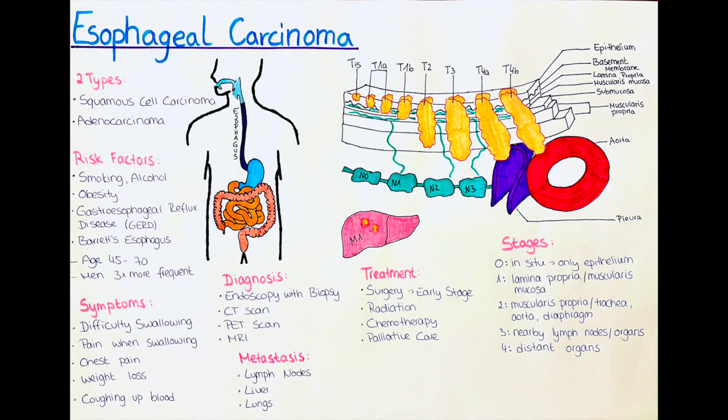In addition to the TNM and AJCC staging systems, the grade of the cancer — which describes how abnormal the cancer cells look under a microscope — may also be taken into account when determining prognosis and treatment options. The most common sites of metastases in esophageal cancer are the lymph nodes, liver, and lungs.